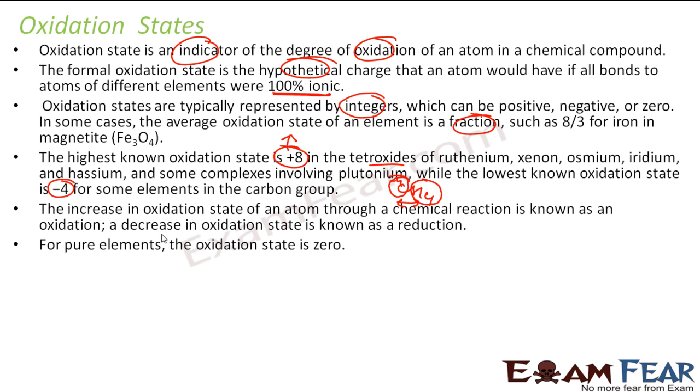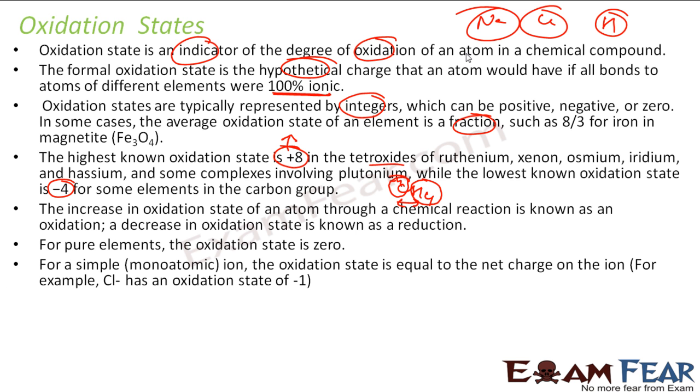So for pure elements, oxidation state is 0. For example, sodium, carbon, hydrogen, any pure element, the oxidation state is 0. For simple ions, oxidation state is equal to net charge. For example, chlorine ion oxidation state is minus 1. H plus ion oxidation state is plus 1. Na plus oxidation state is plus 1. Mg plus 2 oxidation state is plus 2.